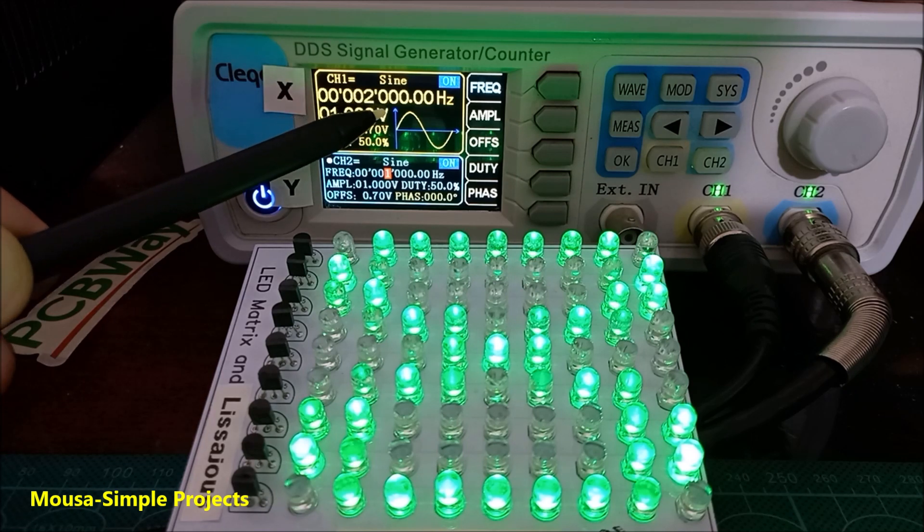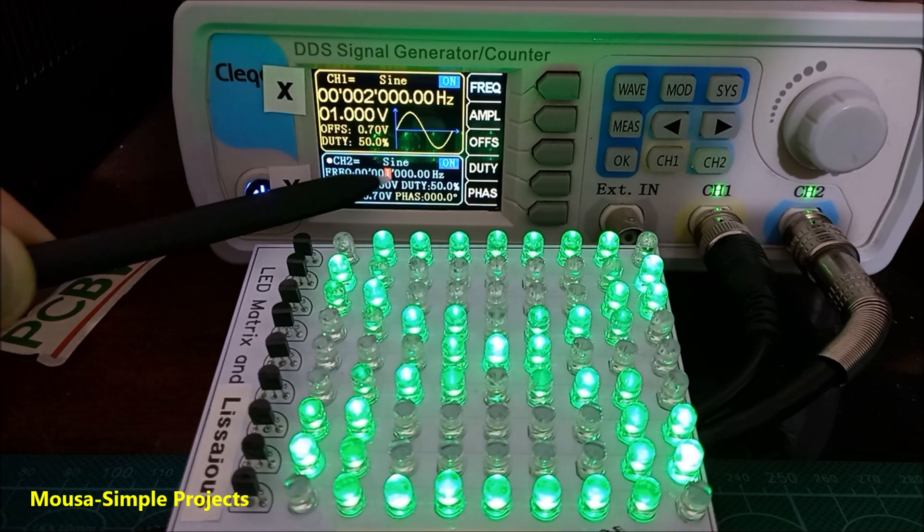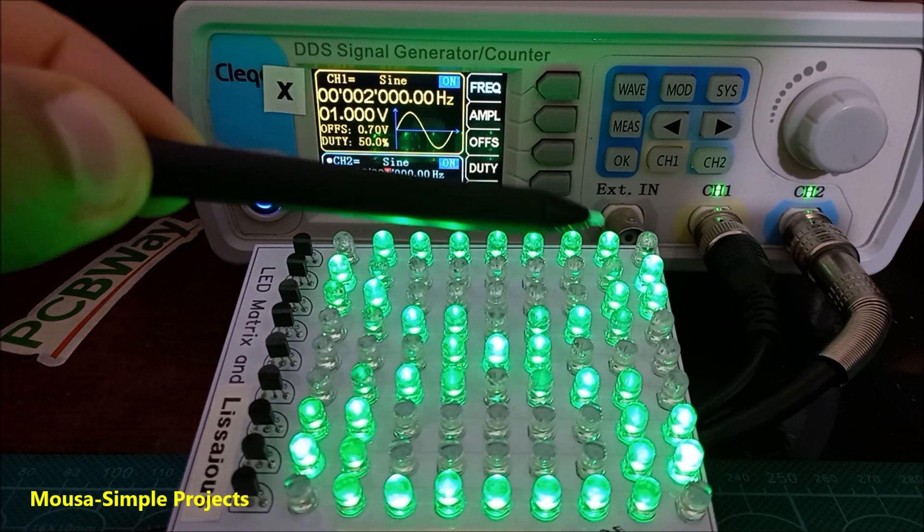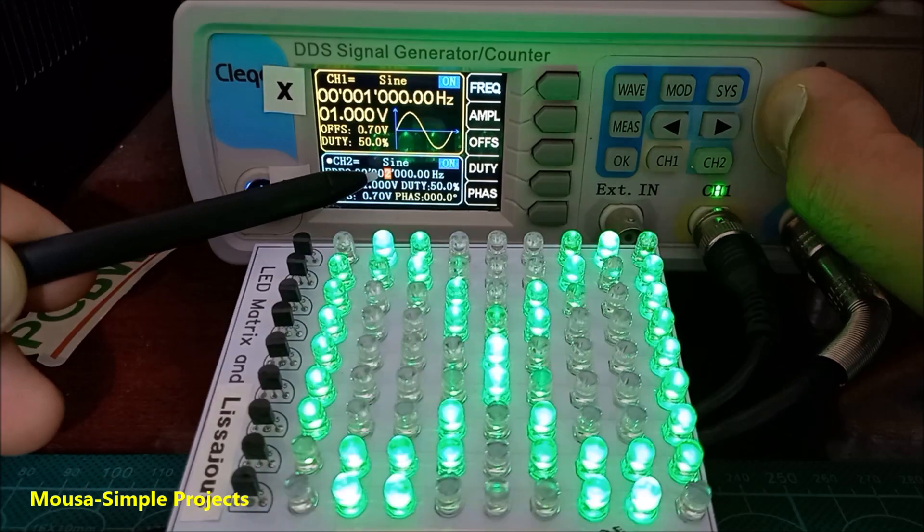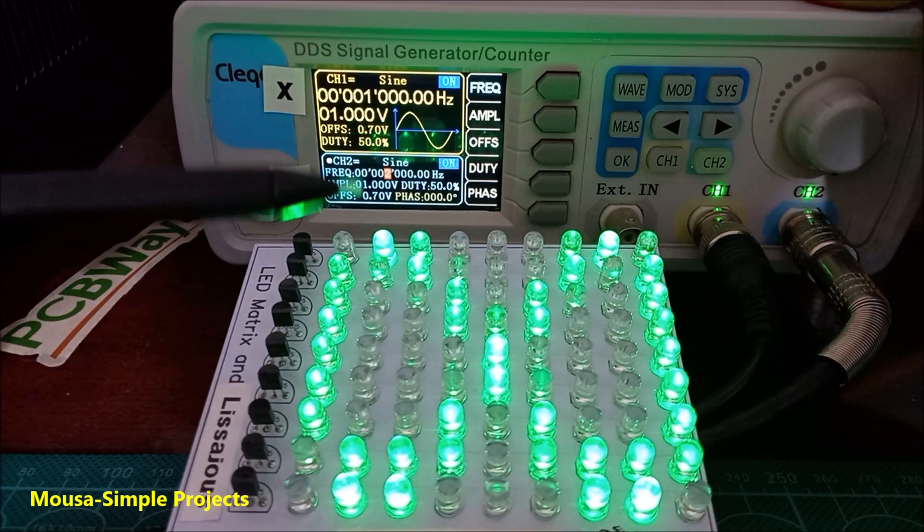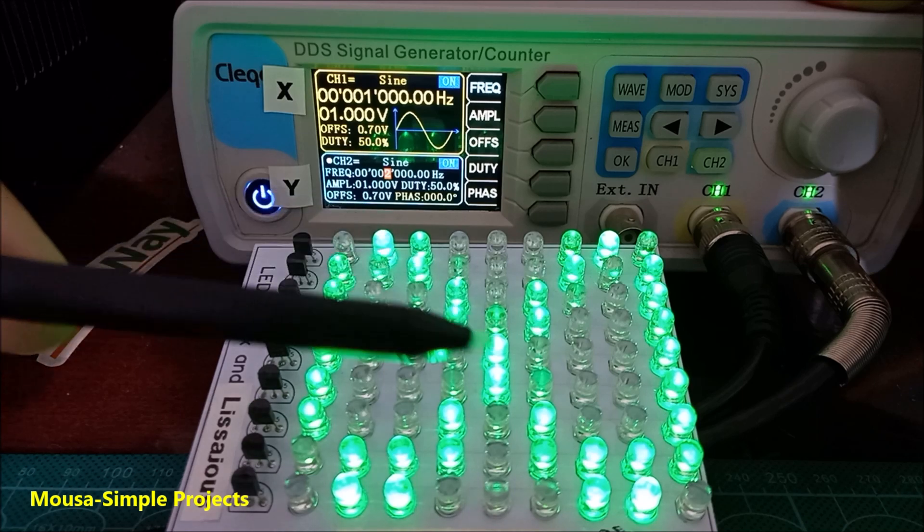When the frequency of the x-axis is more than the y-axis by 2 times, we got this shape. And if the frequency of the y-axis is more than the x-axis by 2 times, we got this one.